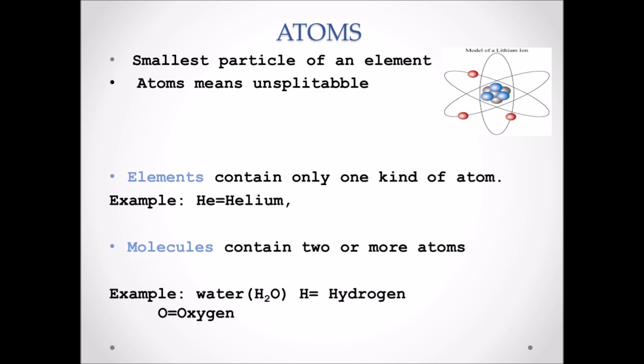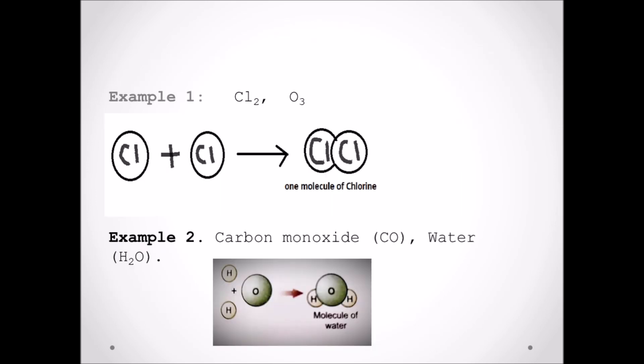Next, atoms and molecules. Smallest particle of an element, so it cannot be made smaller or is unsplittable. Every matter is made up of atoms. Elements contain only one type of atom where molecules contain two or more types of atoms. Some molecules are made up of only one type of atom, which is shown here in the example: two atoms of chlorine combined to form one molecule of chlorine. In example two, we can see it shows a molecule containing different atoms, which is two atoms of hydrogen and one atom of oxygen combines to form water, H2O.